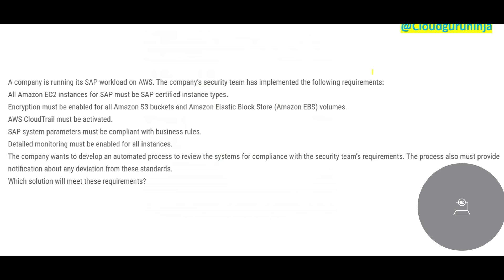The next question: a company is running its SAP workload on AWS. The company's security team has implemented the following requirements: all EC2 instances for SAP must be SAP-certified instance types — SAP itself certifies these for performance, reliability, compatibility, and support. Encryption must be enabled for all S3 buckets and EBS volumes. CloudTrail must be activated.